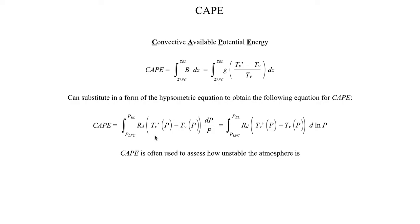CAPE is often used to assess how unstable the atmosphere is. By unstable, we mean: if we lift an air parcel, does it keep accelerating upward or come back down? In an unstable atmosphere, lifting the air parcel causes it to accelerate upward, whereas in a stable atmosphere the lifted air parcel comes back down to where it started. Unstable: the air parcel rises and keeps running upward. Stable: it returns to where it started.